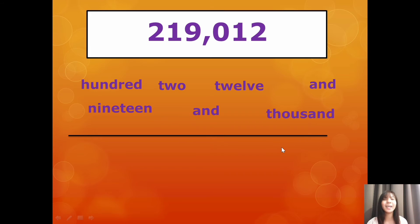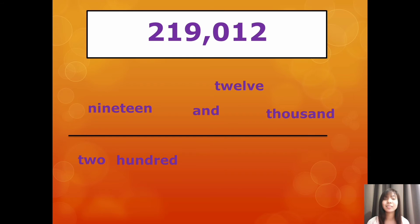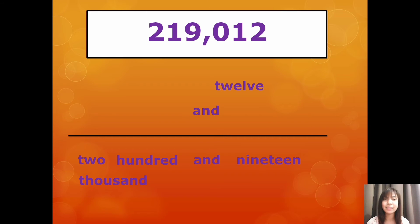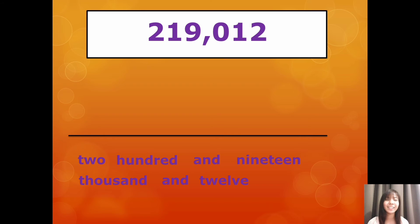So, let's start. First is two hundred and nineteen thousand, and then the word 'and', and twelve. Let's read the number in words: two hundred and nineteen thousand and twelve.